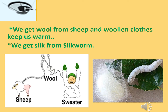We get silk from silkworms, and the process of silk production is known as sericulture. In this process, silkworms are cultivated on mulberry leaves. They make a cocoon around themselves. These cocoons are dissolved in boiling water to extract individual long fibers, which are then folded and fed into the spinning reel. Finally, we get the silk thread as our final product.